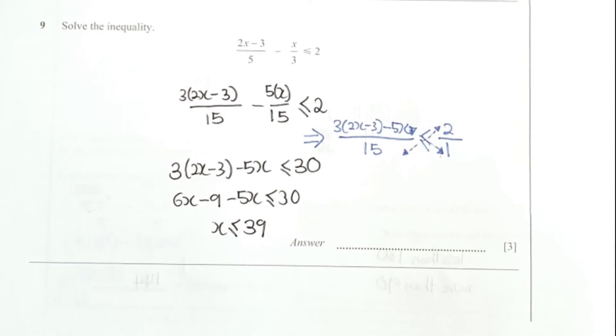For question 9, first thing first I changed the denominator of the variables on the left hand side into the same, which is 15. Then I took 15 multiplied by 2 to get to 30, ran the calculation, so your final result will be x less than or equal to 39.